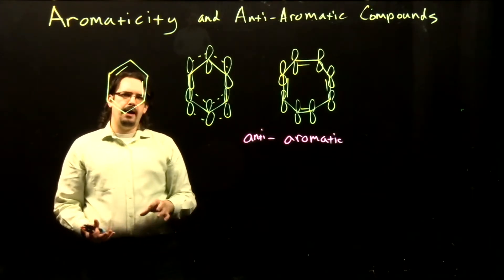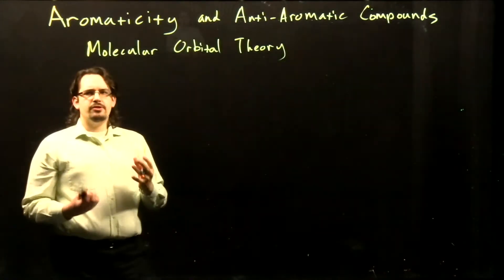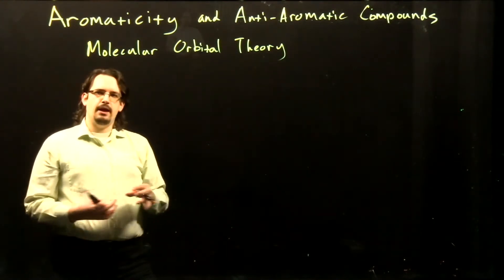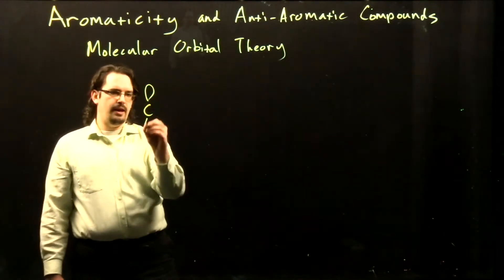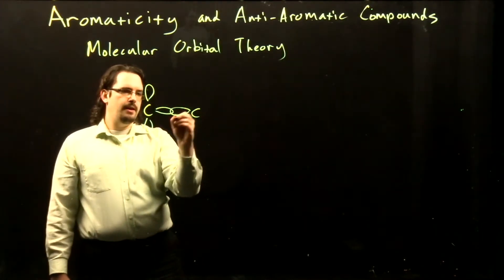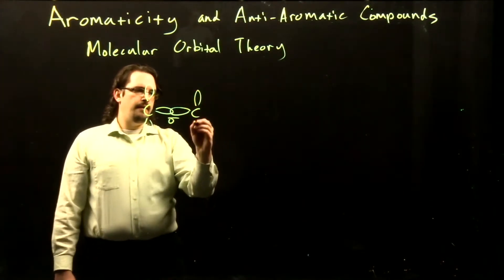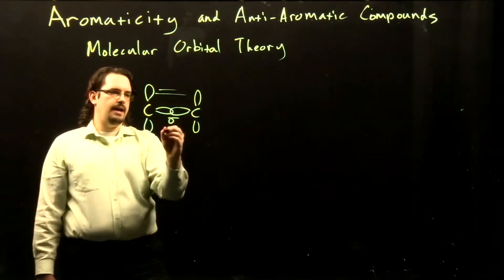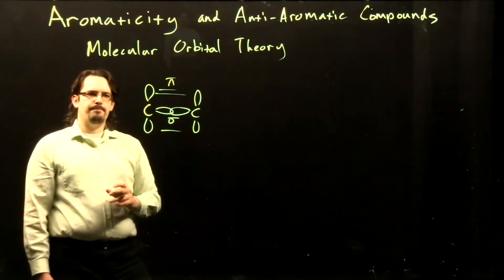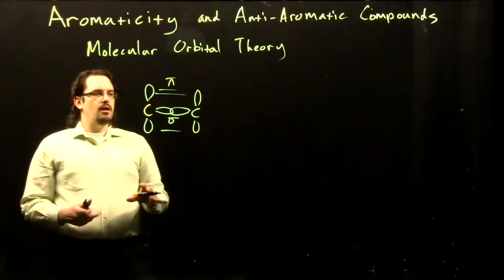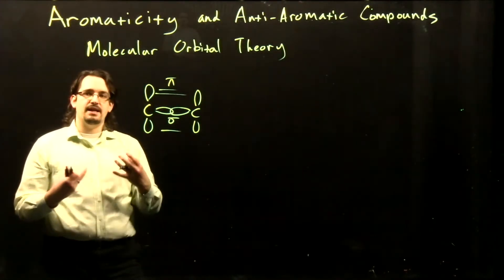To understand this, we have to go back to something that we learned about in general chemistry, which is molecular orbital theory. With our traditional valence bonding theory, we're used to thinking of bonds between atoms forming just based on overlap of orbitals. So in our benzene, we have our sp2 hybridized carbons forming a sigma bond with their two head-on overlapping sp2 orbitals, and then they use their p orbitals to form a side-on overlapping pi bond. Now in molecular orbital theory, we instead are taking our orbitals from our individual atoms and combining them together to make entirely new molecular orbitals.